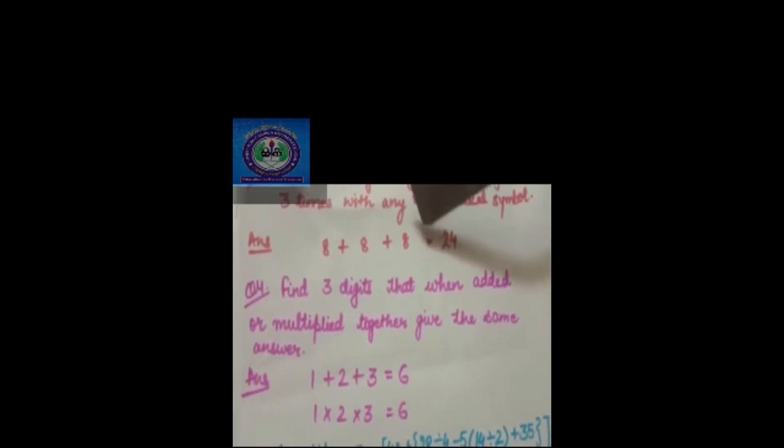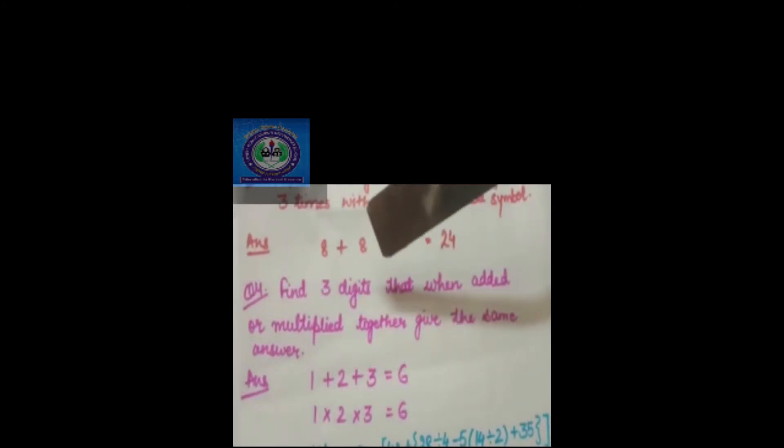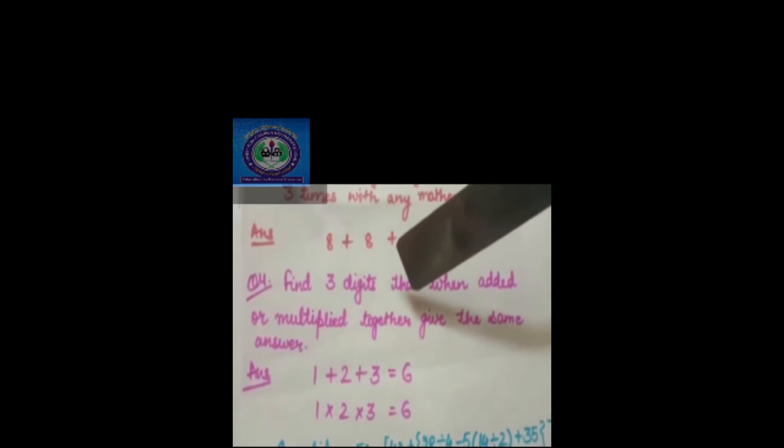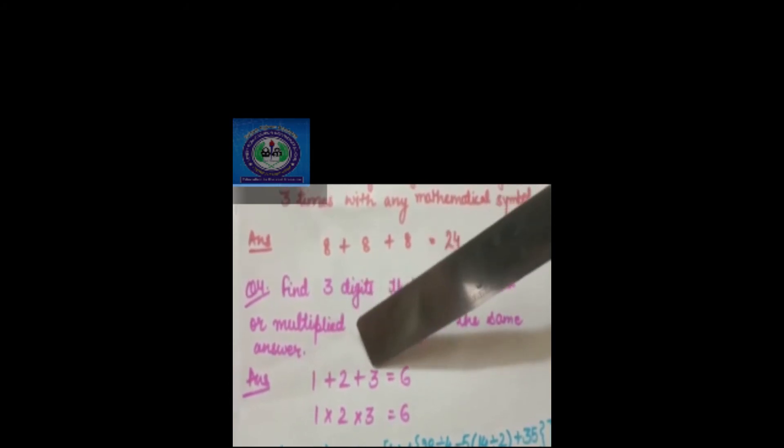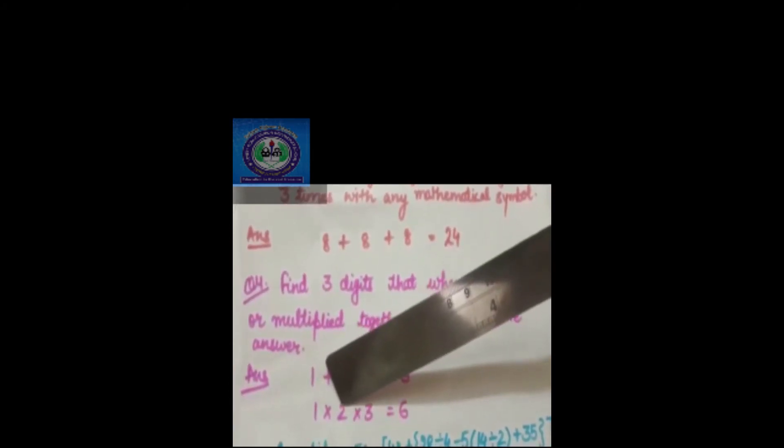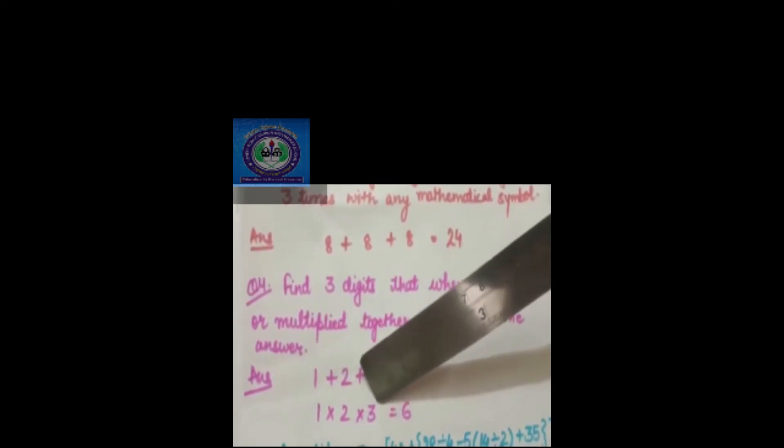Let's move to one more interesting one. Find three digits that when added or multiplied together give the same answer. So I have tried with these numbers: 1 plus 2 plus 3, you will get the result 6, and when 1 multiplied by 2 and 2 multiplied by 3, you will get the result 6.